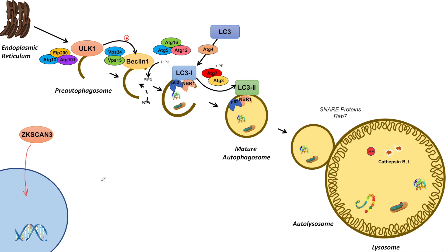When ZAXSCAN3 enters the nucleus, it can bind to the DNA and repress certain genes. It is a negative regulator of TFEB, but it also has its own effects — it represses genes such as Beclin-1, LC3, and some of the Wipi proteins as well. So in the fed state, when ZAXSCAN3 is in the nucleus, it represses the expression of Beclin-1, Wipi proteins, and LC3.